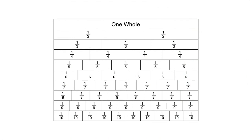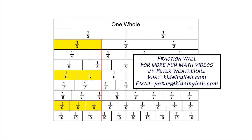Let's summarise what we've found. 1 third, 2 sixths and 3 ninths are equivalent fractions. One way to check for equivalent fractions is to see which fractions line up with 1 third when you draw a vertical line from the end of 1 third down the fraction wall. The ends of 2 sixths and 3 ninths line up nicely with 1 third.